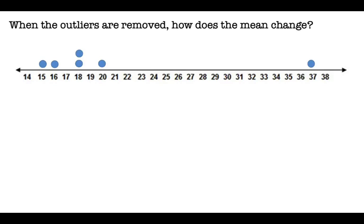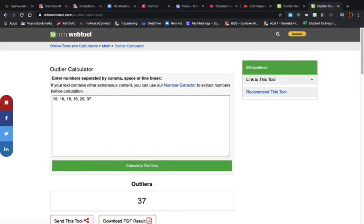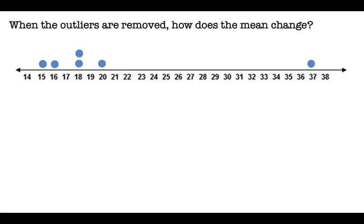All right, number five, when the outliers are removed, how does the mean change? All right, so we have a dot plot here. We have a 15, a 16, two 18s, a 20, and a 37. So we can't automatically assume that that 37 is an outlier. We have to make sure and check, because sometimes they could be tricking you. And one of the answer choices could be that there is no outlier. So we have to go ahead and put in those values into that website. Or again, you can hand calculate it like I showed you last week on the 602 video. But just for sake of time, we're going to use that website. All right, so now we're going to hit calculate outliers to see if we have an outlier. And 37, sure enough, is our outlier.